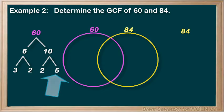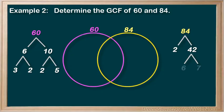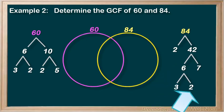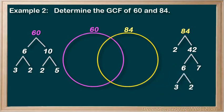Now let's switch to 84. Maybe we decide to divide this one in half: 2 times 42. Then 42 can be divided into 6 times 7, and 6 can be divided into 3 times 2. So we're left with 4 prime numbers: 2, 3, 2, and 7.